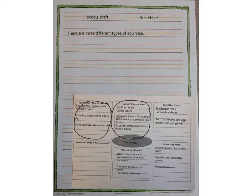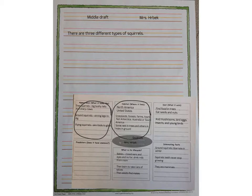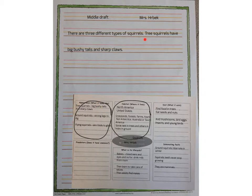Once you are done writing your first sentence, you can go on and do the next sentences. For the next sentences, you're going to actually write the facts you chose to write about. You don't have to write about every single fact, but you can if you have enough space. Since I only have three different types of squirrels, I'm going to write about every single kind. My first note is about how tree squirrels have big bushy tails and sharp claws, so I'll write that in a sentence. Take a look at your first fact and write a complete sentence with a capital and a period on your draft paper.